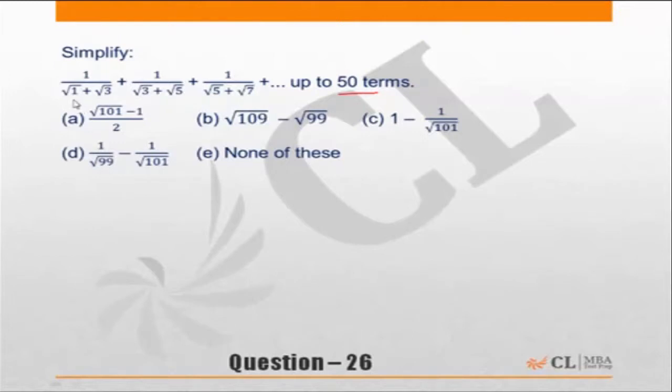The last term would be - the first term is 1 into 2 plus 1, second term is 2 into 2 plus 1, third term is 2 into 3 plus 1, so the last term would be 1 upon 50 times 2 plus 1, which is 101, and this would be 99.